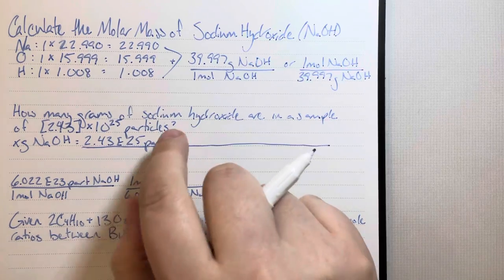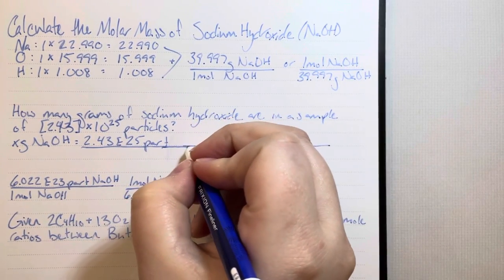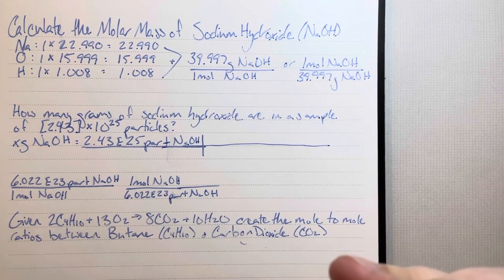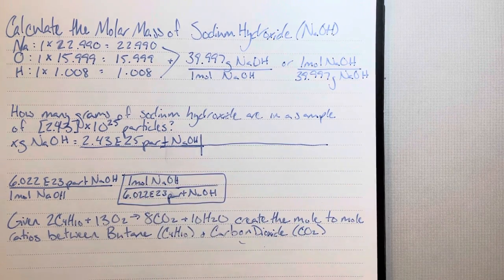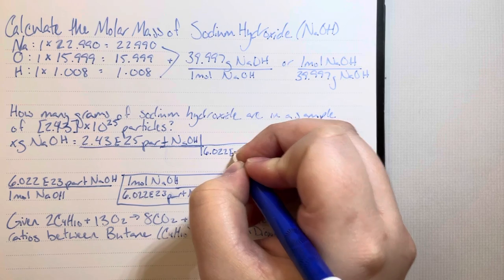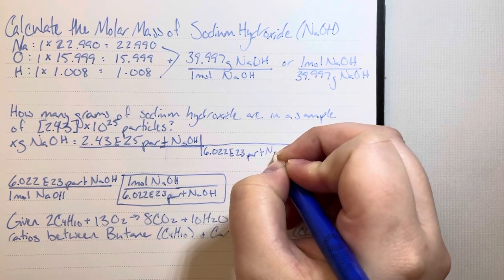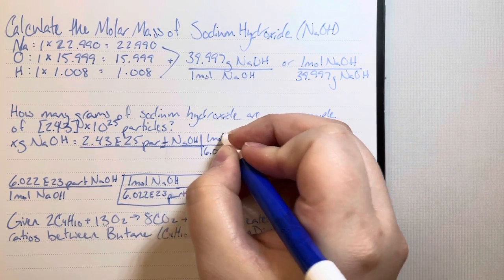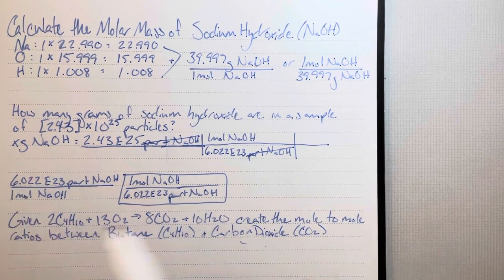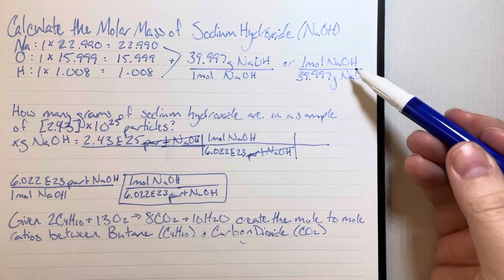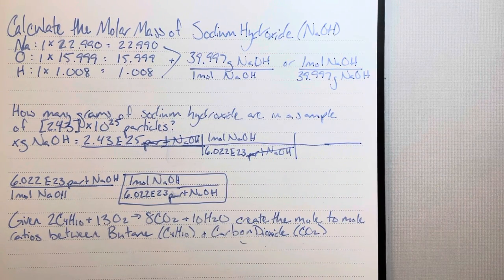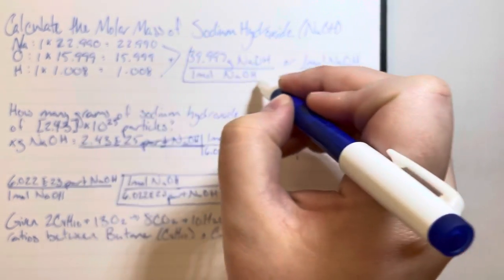Currently I have particles of sodium hydroxide in the numerator, which means I'll need to choose the version of the Avogadro's number conversion factor that has particles of sodium hydroxide in the denominator. Particles of sodium hydroxide will cancel, leaving me with moles of sodium hydroxide. However, I asked for grams, so I will need the molar mass for sodium hydroxide, which I already calculated. I need to choose the molar mass conversion that cancels out moles and gets me to grams — that will be the left molar mass.